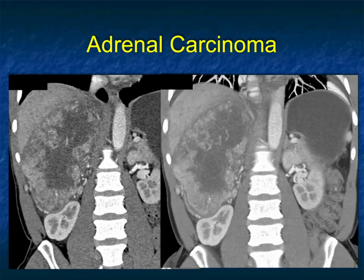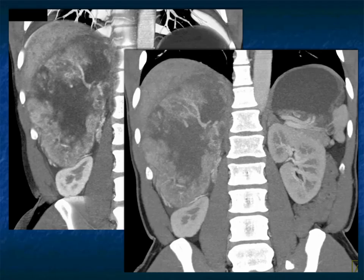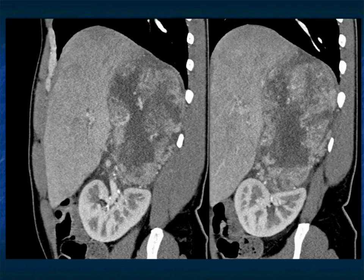Here's another case: varied enhancement, solid and cystic large mass. Not much else you should be thinking about. A very large tumor pushing on the patient's right kidney. Here it is on the sagittal view with the areas of necrosis very nicely shown.